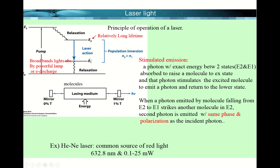To induce laser action you need another light. Since E1 and E2 energy levels are already set, the wavelength of the laser is very specific and accurate because E1 and E2 don't change. When a photon emitted by a molecule falling from E2 to E1 strikes another molecule in E2, a second photon is emitted.